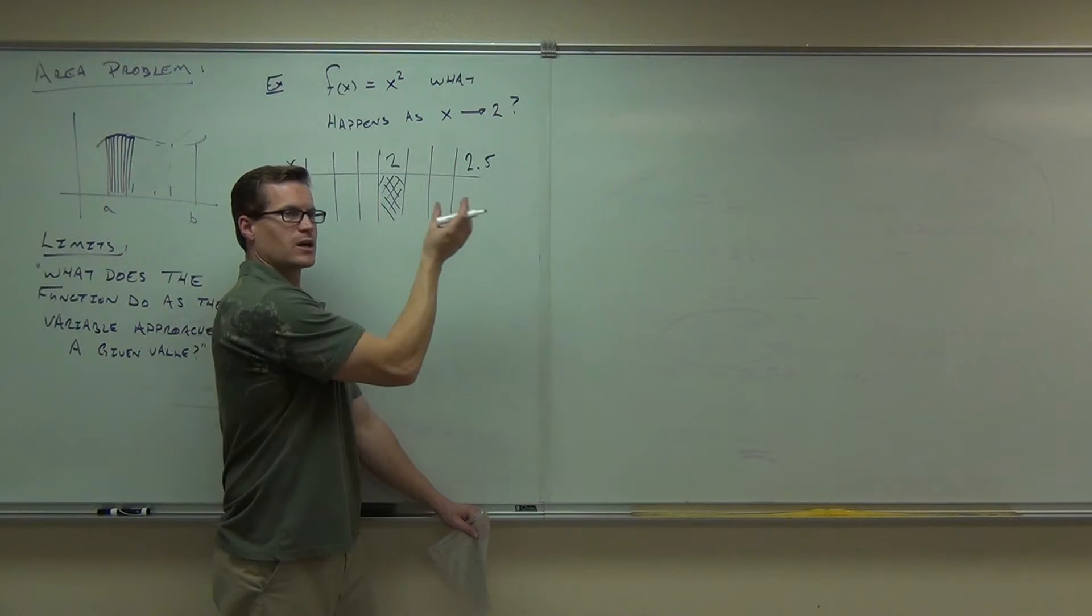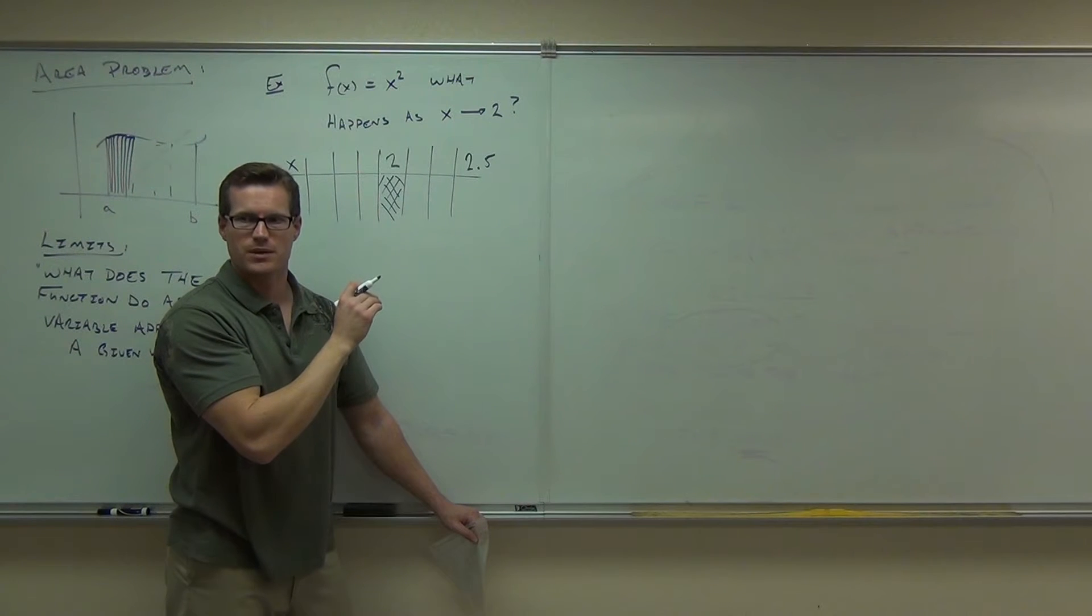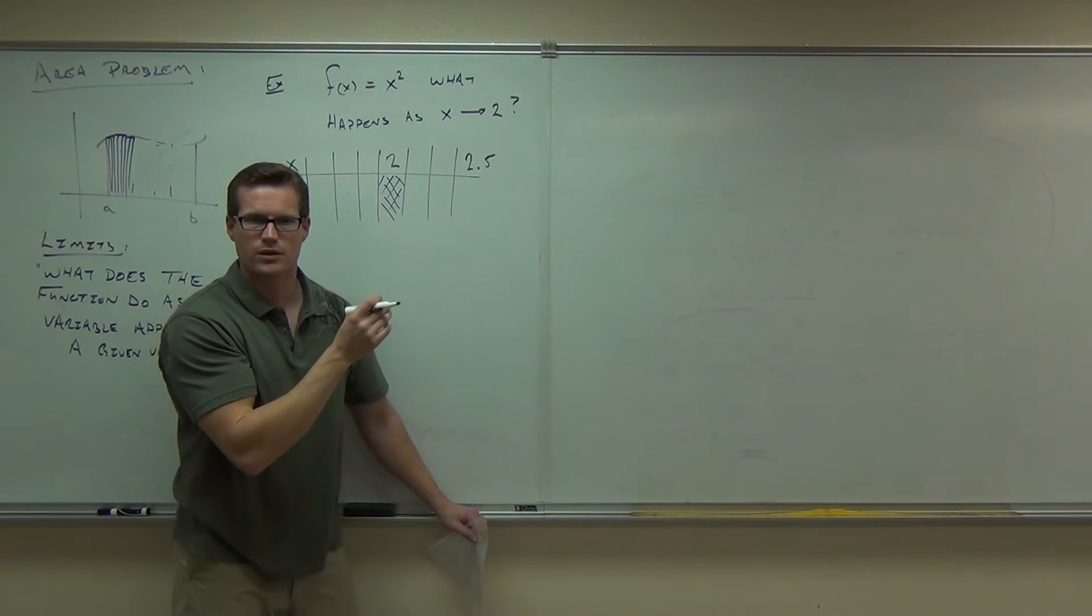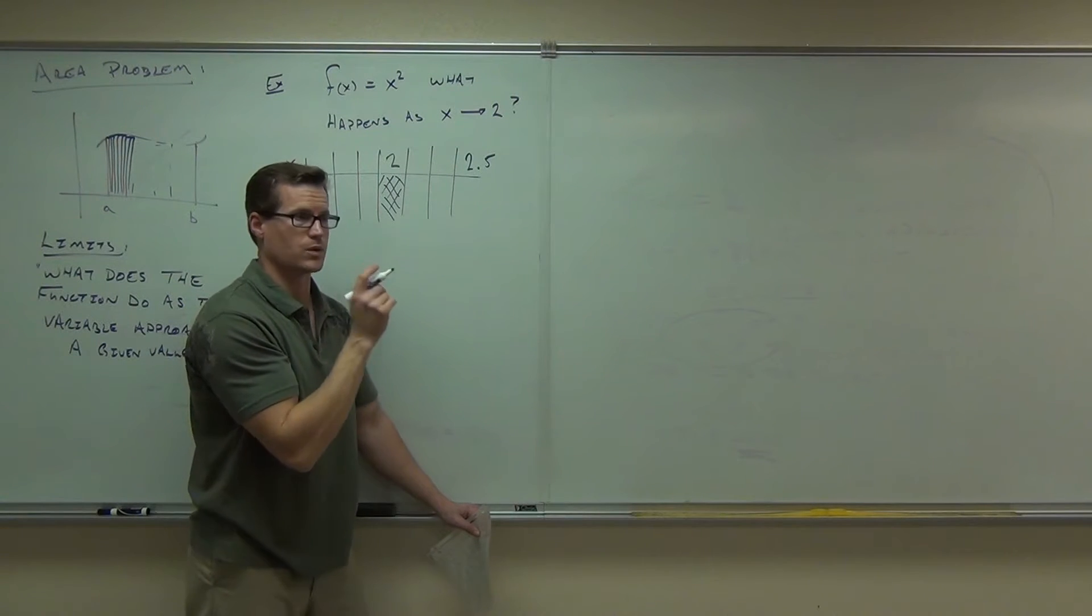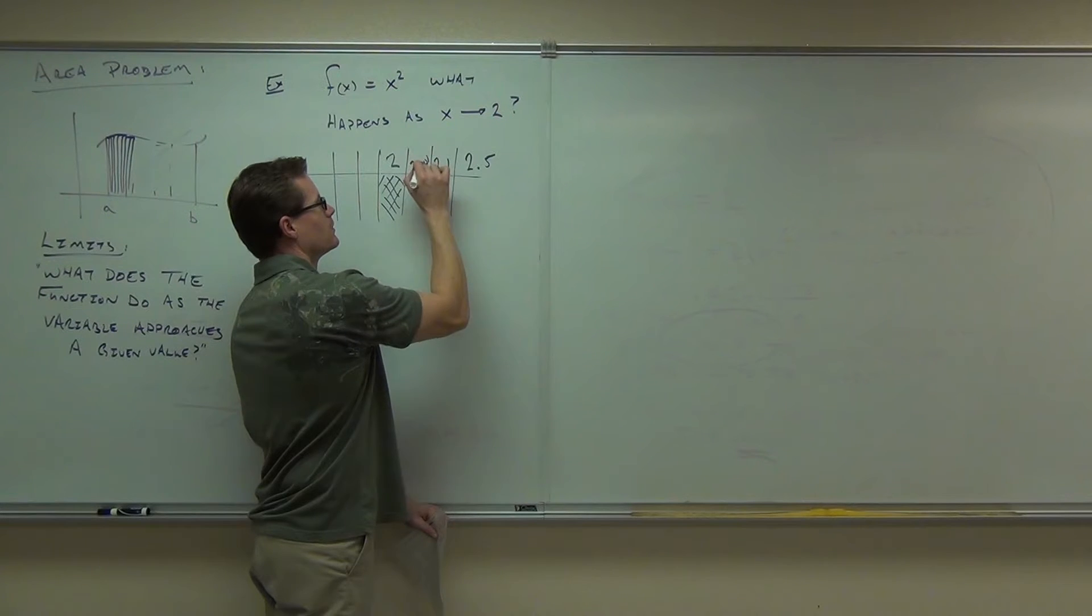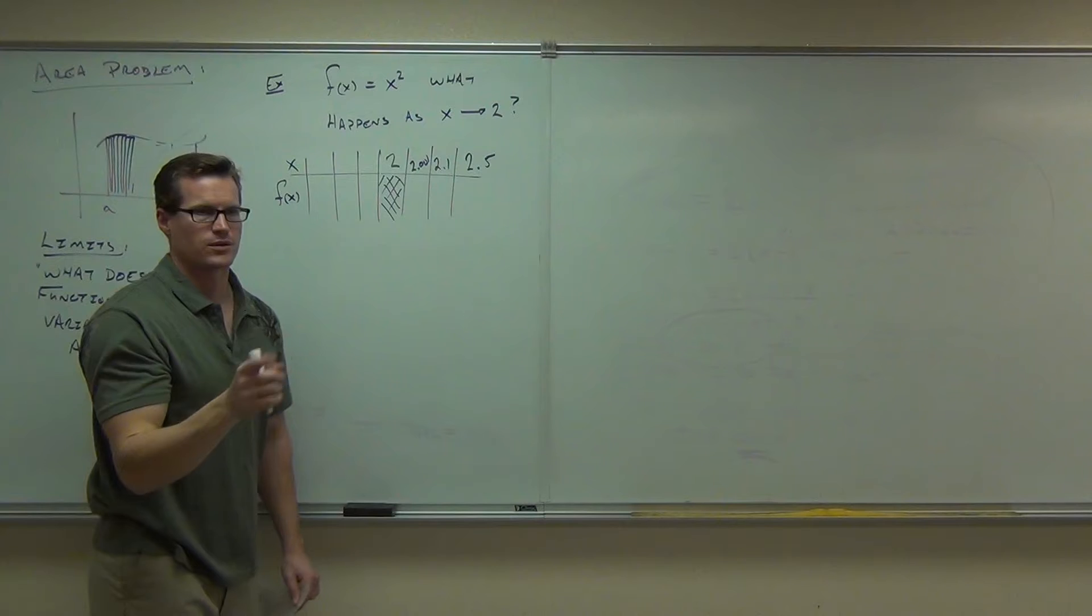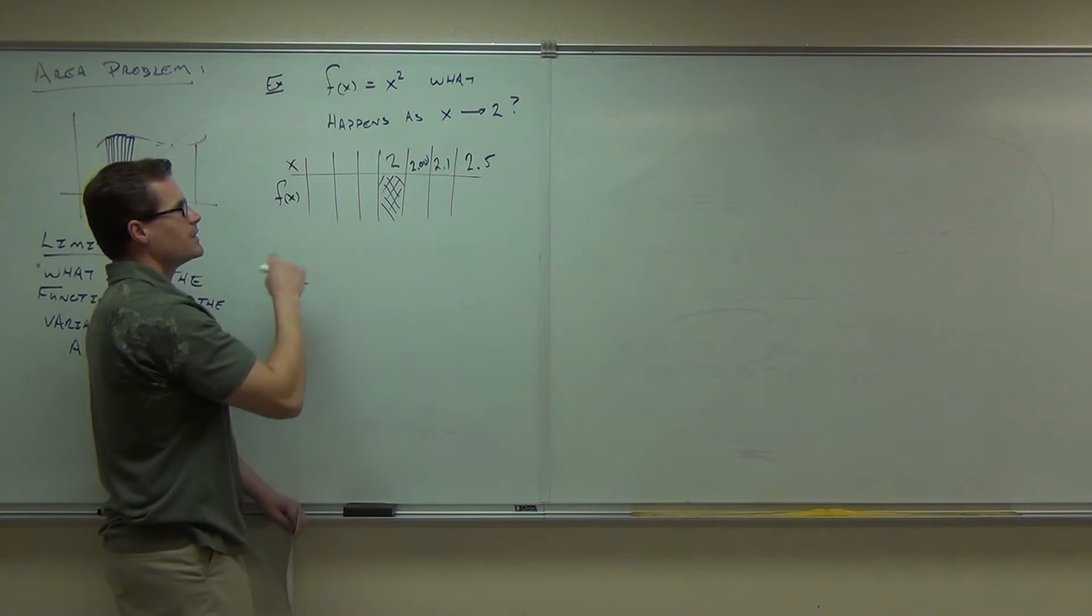Give me something a little bit closer to 2. Closer than that, maybe. 2.1. Yeah, or 2.01. We want really close, right? So 2.1 and maybe 2.001. That's pretty close. Take your calculators out, by the way.